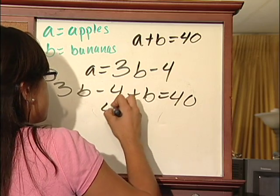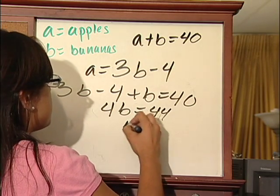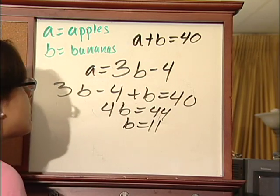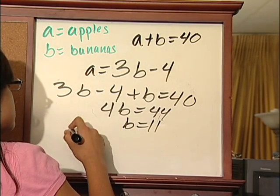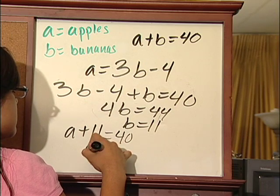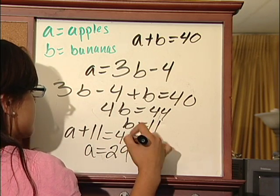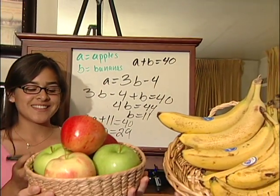So we have 11 bananas. We plug 11 into the top equation: a plus 11 equals 40. Subtracting 11, we get a equals 29. So we need 29 apples and 11 bananas. You've made it to the end! We'd really like to thank you for watching this tutorial, and we hope that you've learned a lot. Thank you.